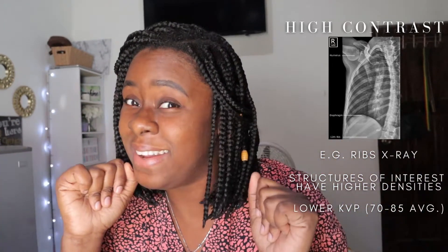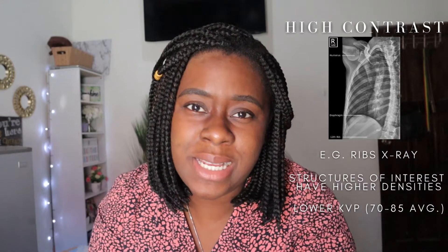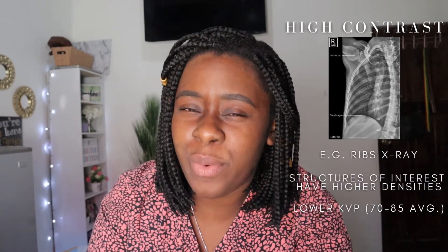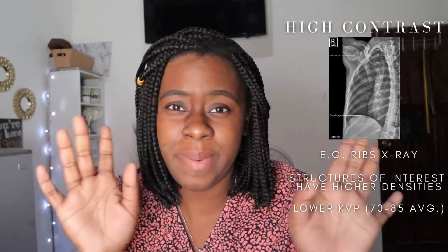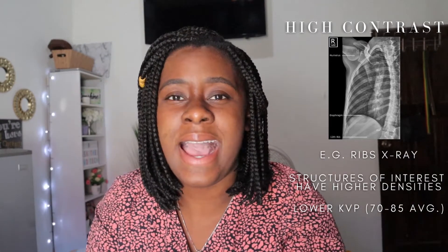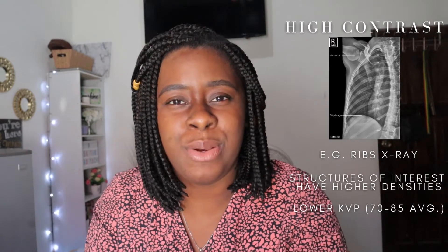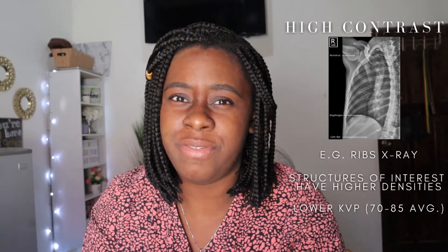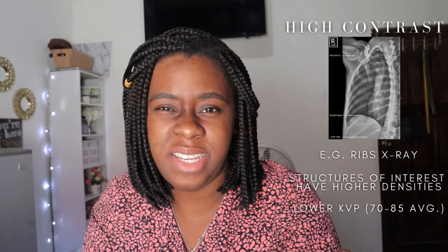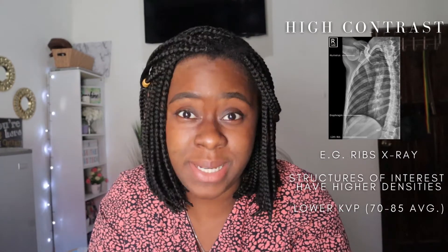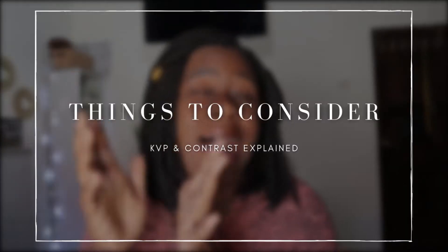For a chest x-ray, we will use exposures around 105 to 120 KVP, but it all depends on the size of the patient. For a rib exposure we use lower KVP because we want to see more differences — so around 70 to 85 KVP, depending on the size of the patient. That is my differentiation when it comes to discussing the differences between a low contrast and a high contrast image.